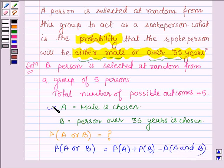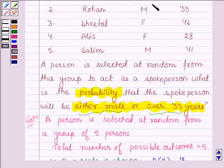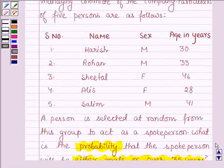Now probability of A, that is probability that a male is chosen among the five is 3 upon 5 since from the given data we can see that there are three males.